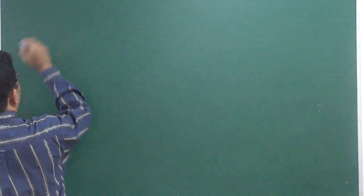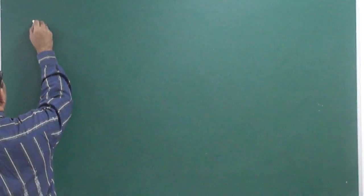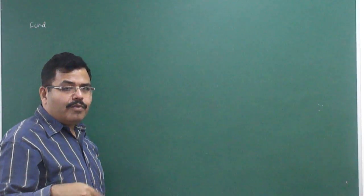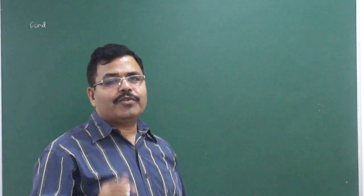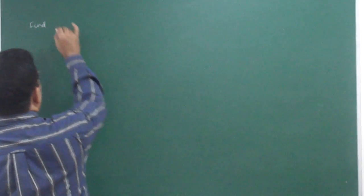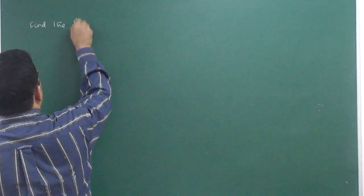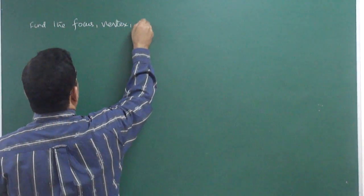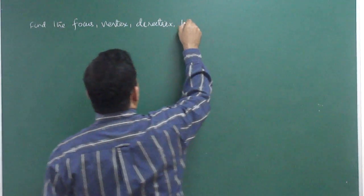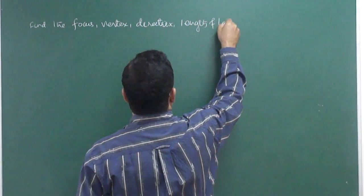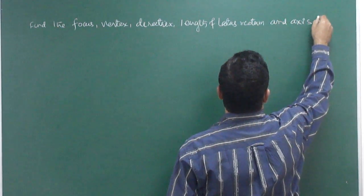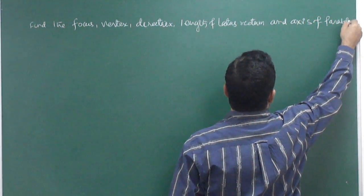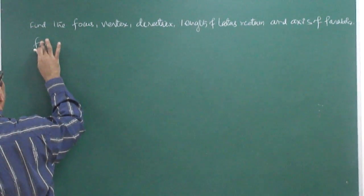We are going to discuss the first type of equations we covered in the previous class. I'm taking a few minutes just spending on it to explain how the formula can be used. We need to find the focus, vertex, directrix, length of latus rectum, latus rectum, and axis of parabola for the following equations.